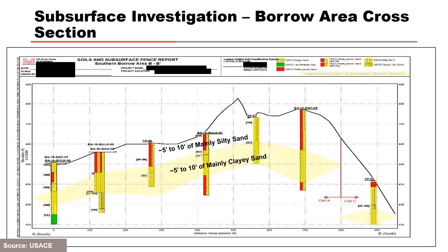Two borrow areas on government property were available for embankment material, along with salvage of the existing embankment material. The upper 5 to 10 feet of the primary borrow area was mainly silty sand, salvaged for shell material as it is stronger but more pervious. The mainly clay sand below that deposit was used for the core because it is more impervious.